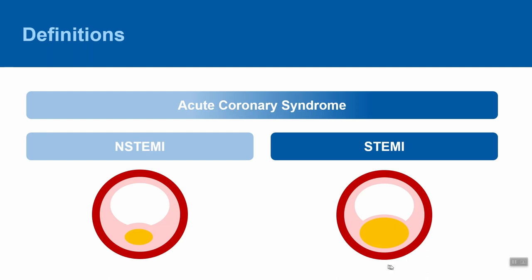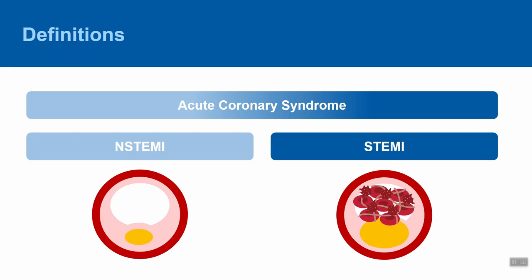Traditionally, healthcare providers are taught to dichotomize acute coronary syndromes on the basis of the ST segment. If the ST segment is significantly elevated, the acute coronary syndrome is classified as a STEMI. If not, it's classified as an NSTEMI. Pathologically, STEMIs are assumed to manifest when a coronary artery is completely occluded by a red, RBC-rich thrombus, whereas NSTEMIs are assumed to manifest when a coronary artery is incompletely occluded by a white, platelet-rich thrombus.